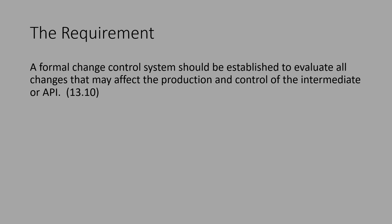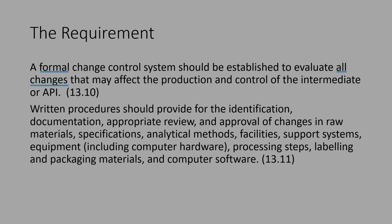Section 13.10 says a formal change control system should be established to evaluate all changes that may affect the production and control of intermediate or API. Written procedures should provide for the identification, documentation, appropriate review, and approval of changes in raw materials, specifications, analytical methods, facilities, support systems, equipment, processing steps, labeling, packaging materials, and computer software.